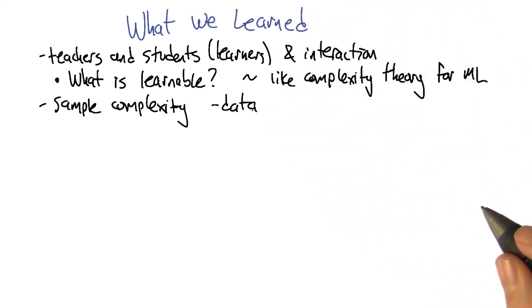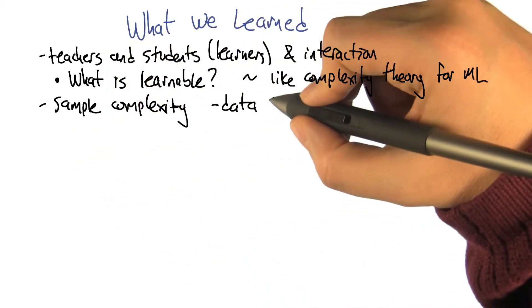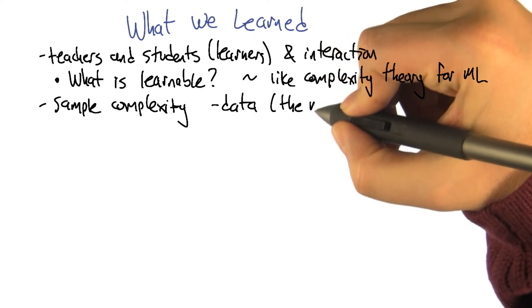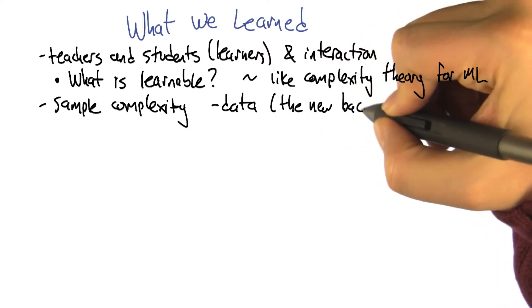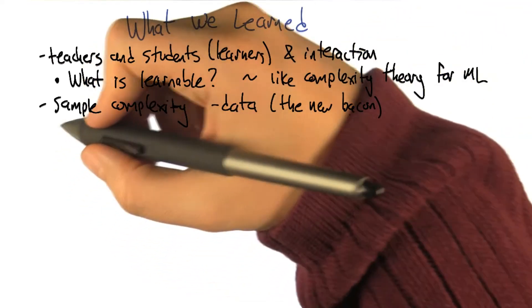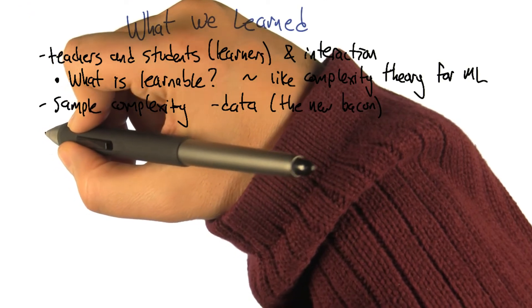I saw a t-shirt recently that says data is the new bacon. So you're saying data is delicious? Yeah, I think we like data a lot. I love data. So that ties us back into the discussion about teachers and students because what we talked about was how if the relationship between the teacher and the student was one way versus another way, we might get different answers about sample complexity.